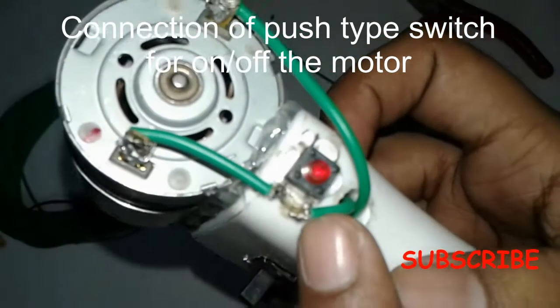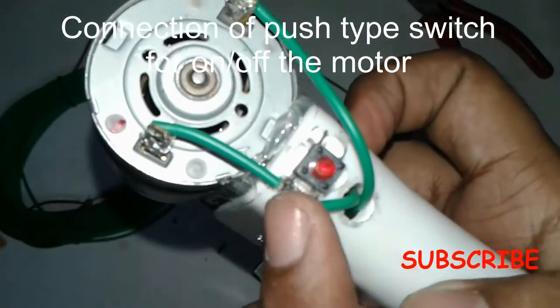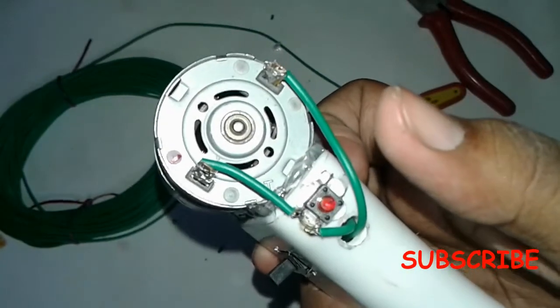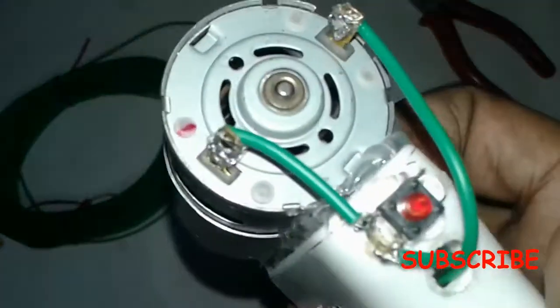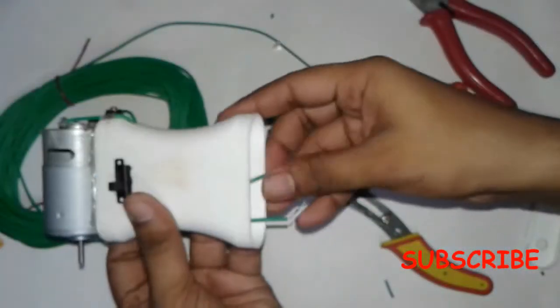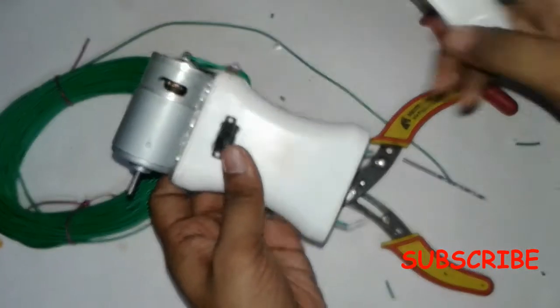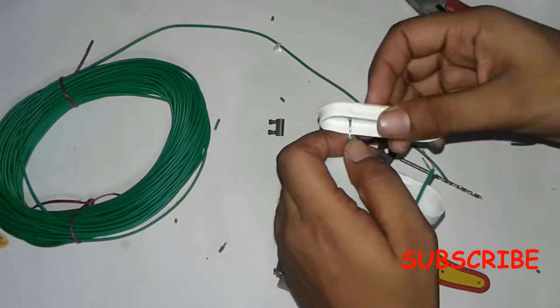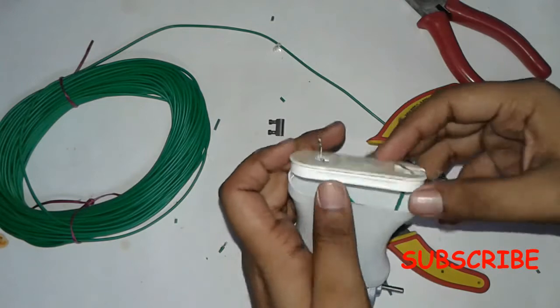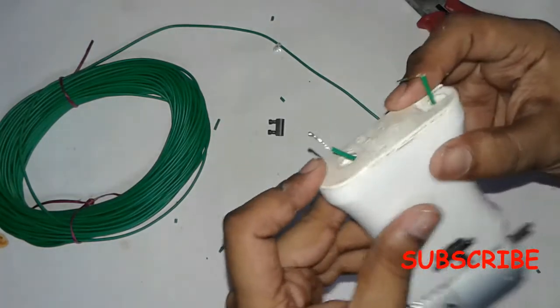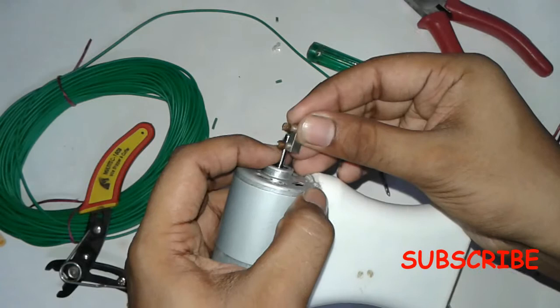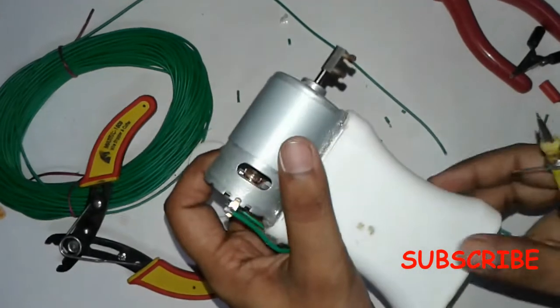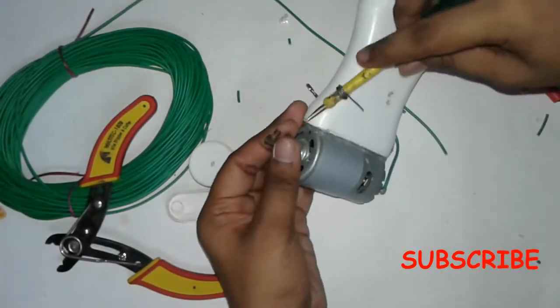This is the push type switch. It is connected here and there, from there to the motor. Now we fix the DPDT with the connector and the motor.